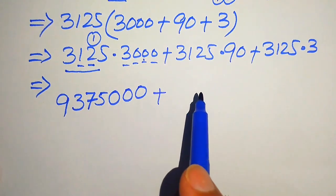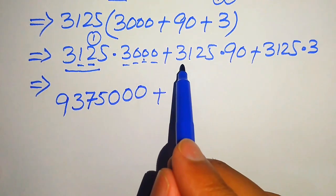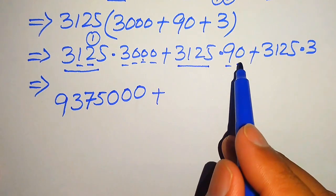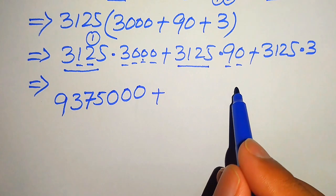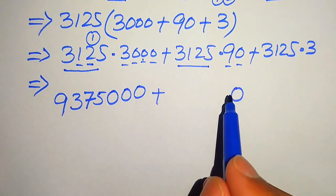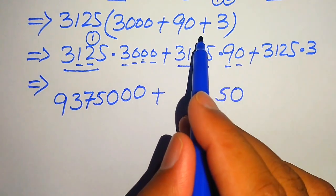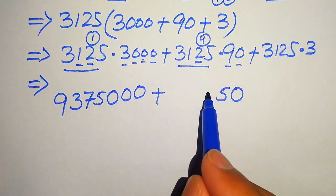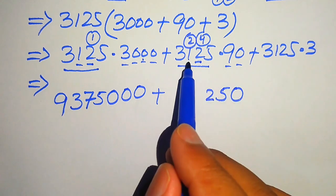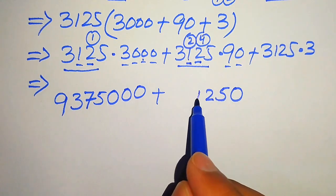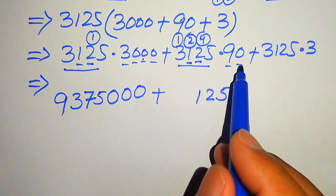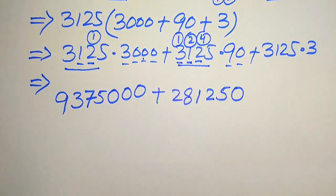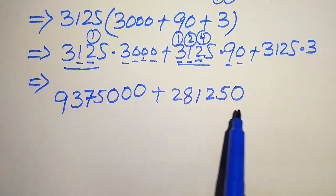For 3125 multiplied by 90: zero times this number is zero; 9 fives are 45 write 5 carry 4, 9 twos are 18 plus 4 is 22 write 2 carry 2, 9 ones are 9 plus 2 is 11 write 1 carry 1, 9 threes are 27 plus 1 is 28. This gives 28,125 with one trailing zero: 281,250.